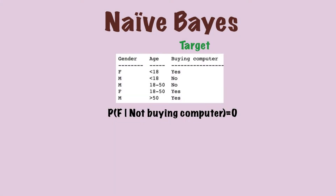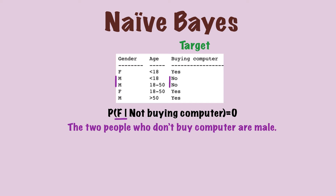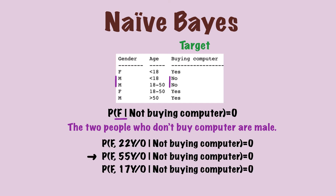To recap, if we have a dataset like this, the probability of female conditioned on not buying computer is zero. This is because the two people who don't buy computer are both male. Following this, these conditional probabilities are all zero. Of course, this is based on the conditional independence assumption of Naive Bayes. If you are not sure about this, please check out the previous videos — we've gone through these concepts in detail before.